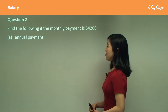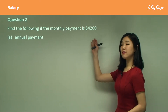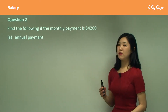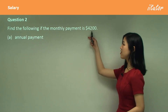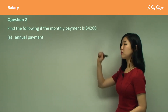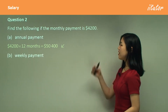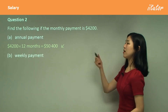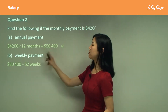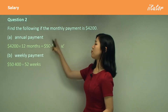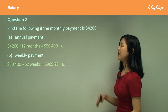Question two: find the following if the monthly payment is given. Now, what's the annual payment? Well, we know that there's 12 months in a year, so to get the annual payment we simply have to multiply this by 12 months. And that's your answer. Now the weekly payment — there's 52 weeks in a year, so I'm simply going to divide the annual payment by 52, which gets you this.